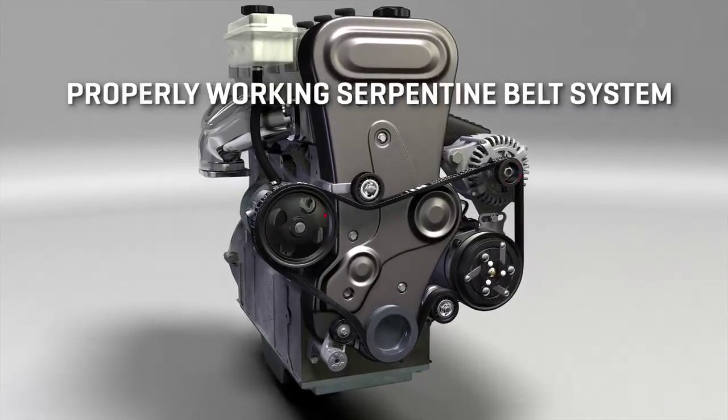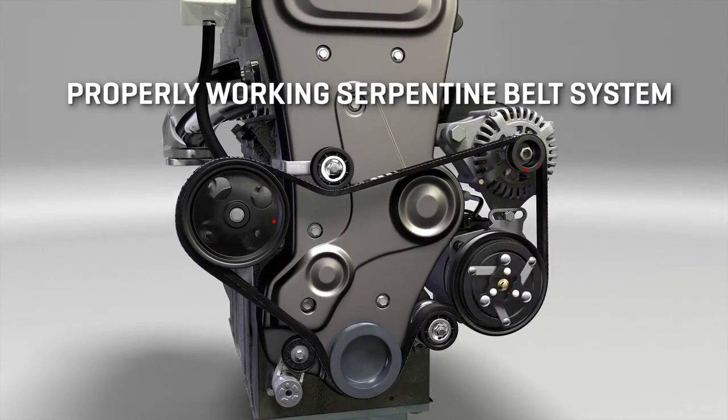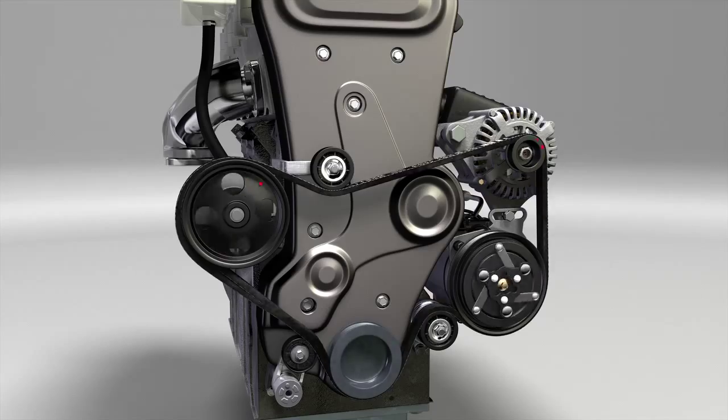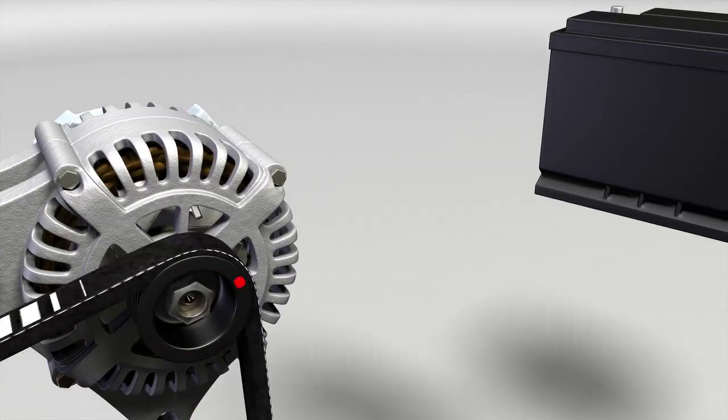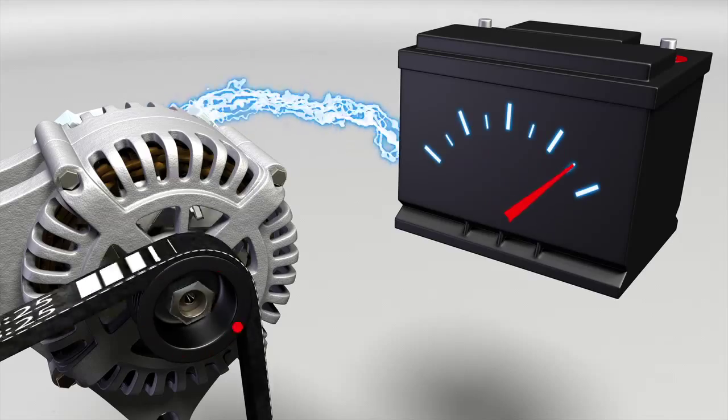When the accessory belt drive system is working properly, all accessories run as they should. The alternator, for example, spins at the right speed, creating electricity to power the vehicle and recharge the battery.